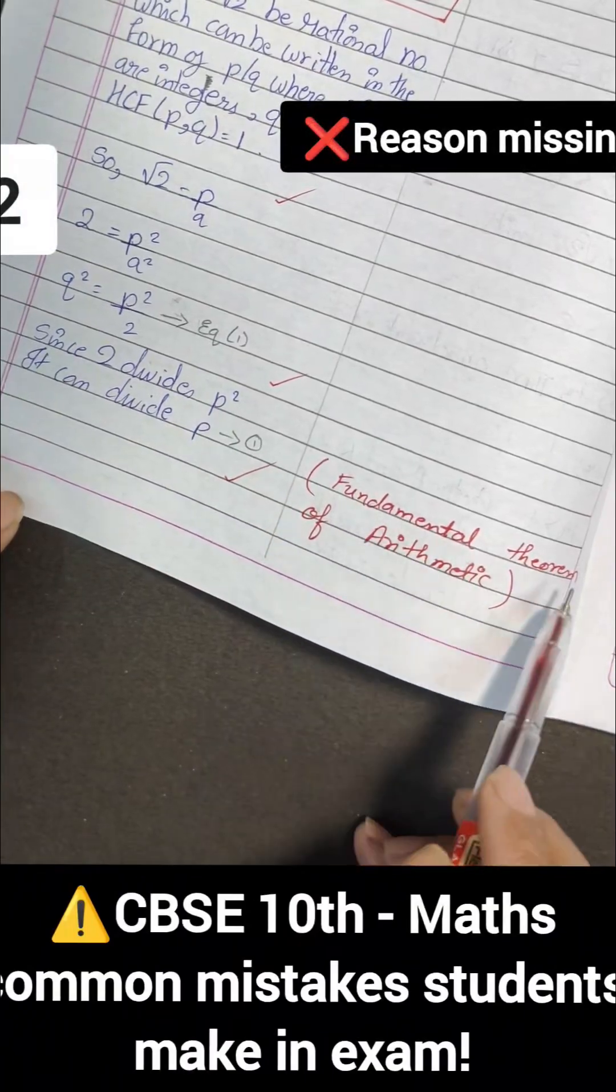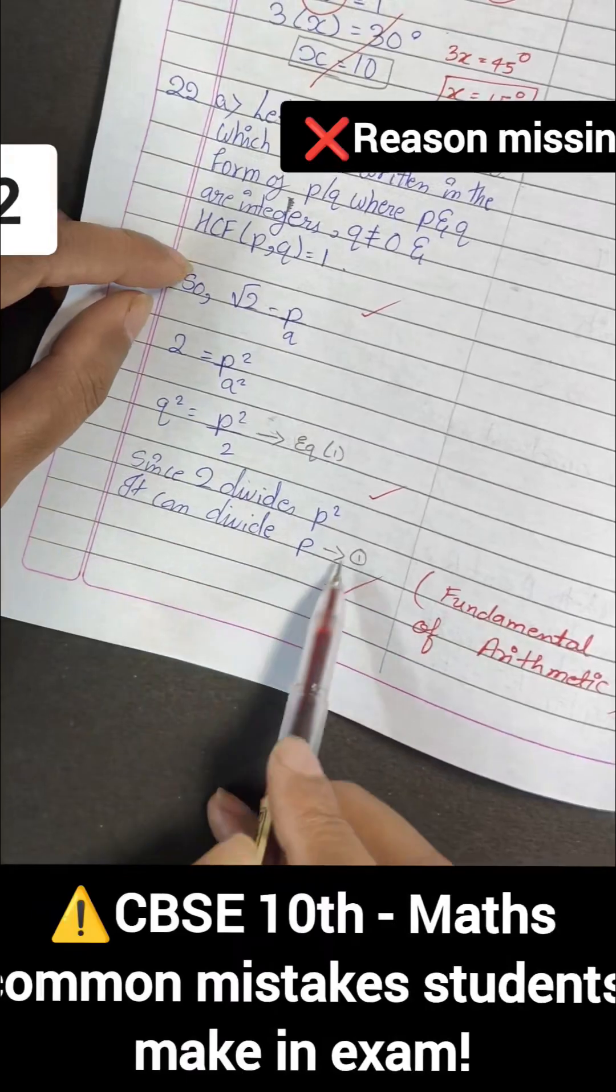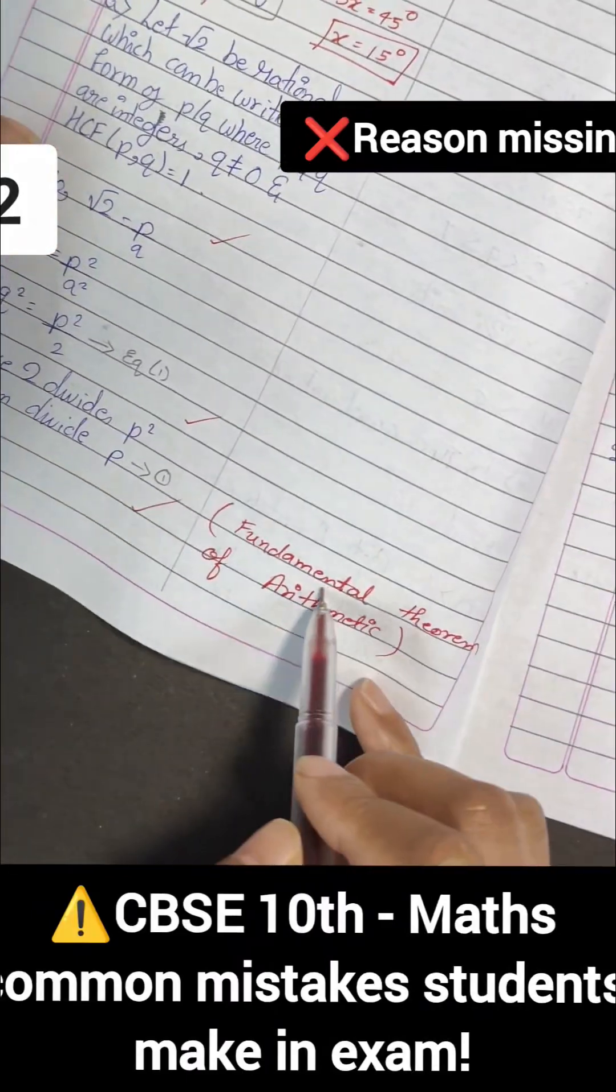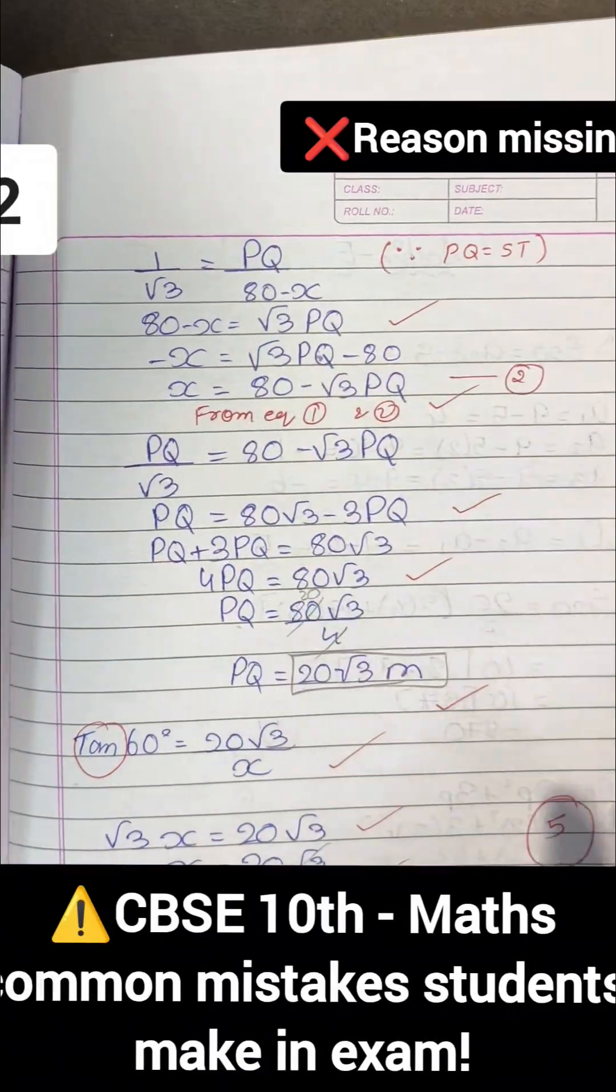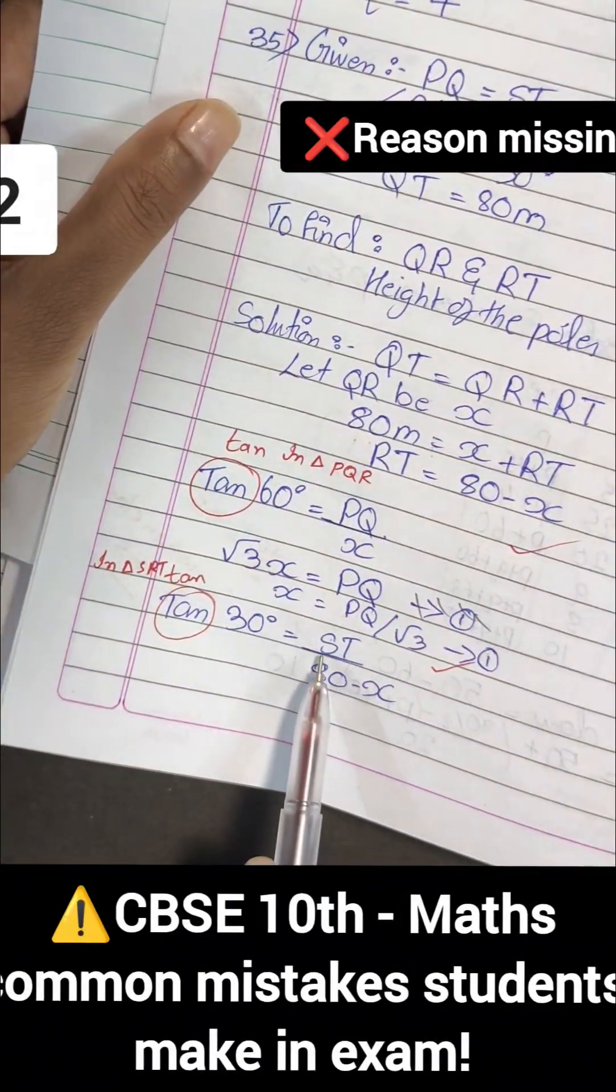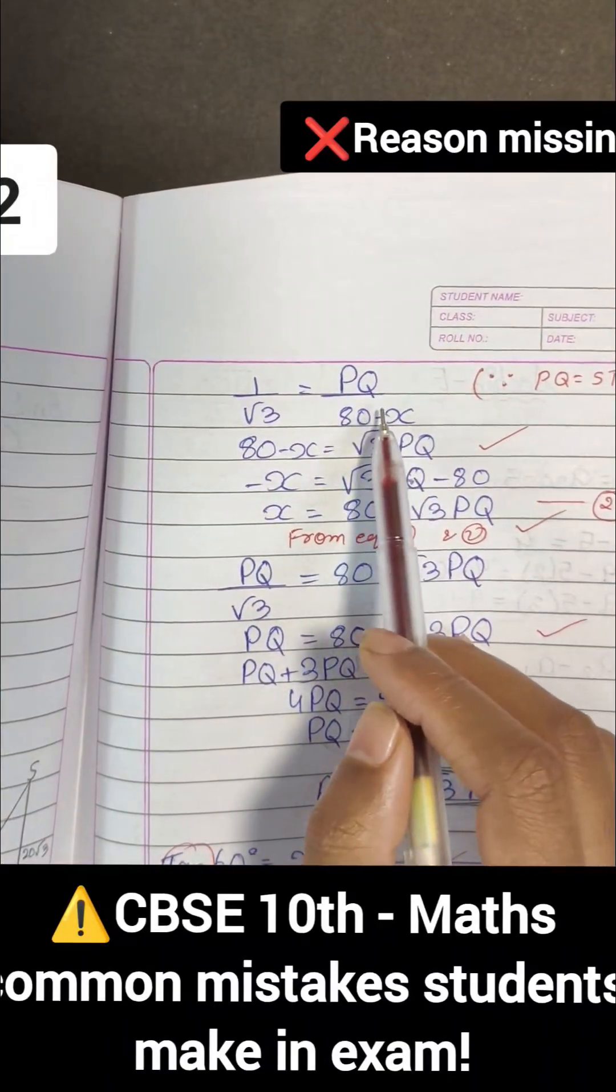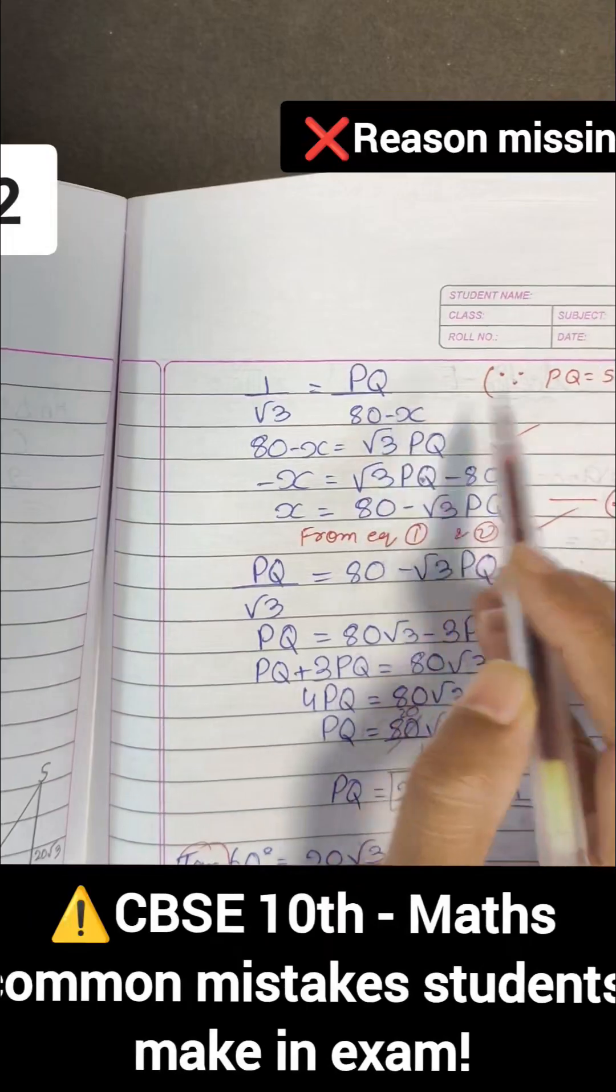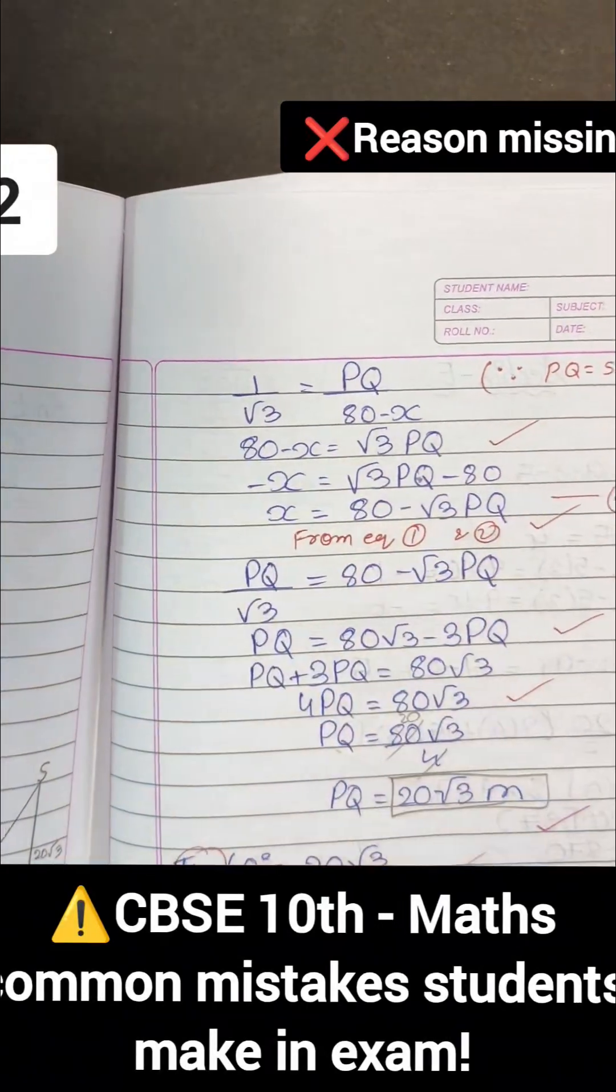Another common mistake is forgetting to write the proper reason. Sometimes it may happen that students are writing the proper thing, but they are forgetting to write the reason. Same thing has happened here. The student has replaced ST with PQ, but why he replaced, he forgot to write it. So make sure that you are writing proper reason beside it.